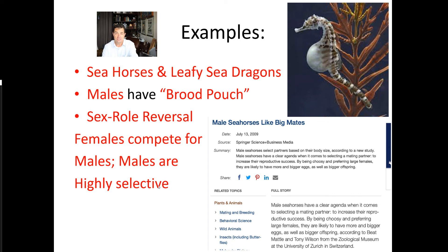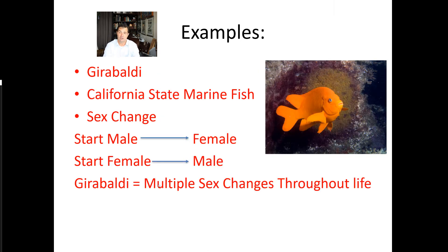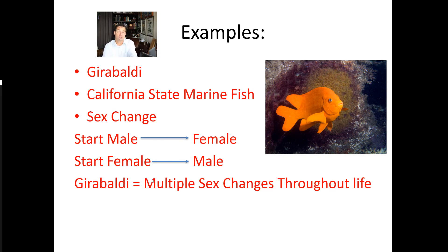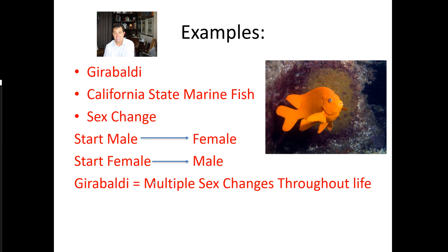That's a great example of unusual mating behavior in ocean fish. Another fascinating behavior is sex change. Our state marine fish, the Garibaldi — that vivid bright-orange fish you can see off Catalina Island or locally along our coast — is one example of a species capable of sex change. There are actually many such fish, and sex change can go different directions depending on species.